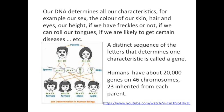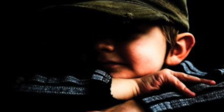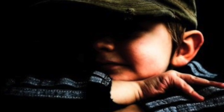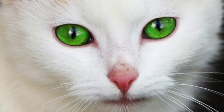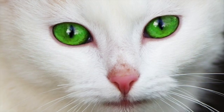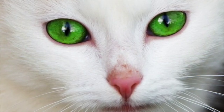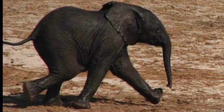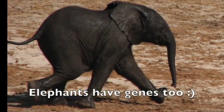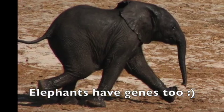Our DNA determines all our characteristics — for example, our sex, the colour of our skin, hair and eyes, our weight, if we have freckles or not, if we can roll our tongues, if we're likely to get certain diseases, and so on. A distinct sequence of the letters that determines one characteristic is called a gene.